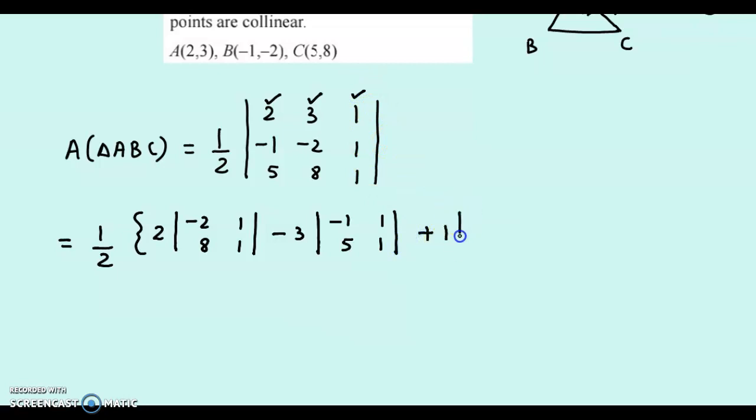And lastly, the third element. Positive 1 into determinant of. Again, deleting the row and column, we have -1, -2, 5, 8. So, we have half into 2 times. -2 into 1, that's -2. Minus 8 ones, that's 8.